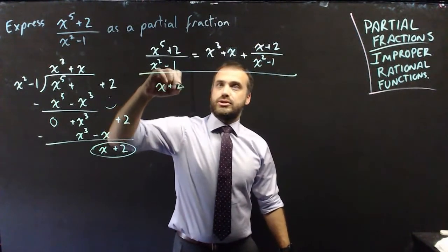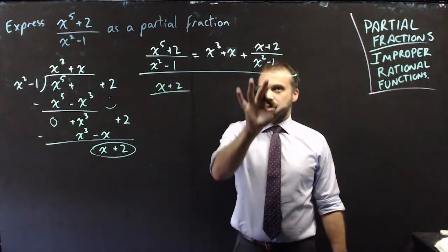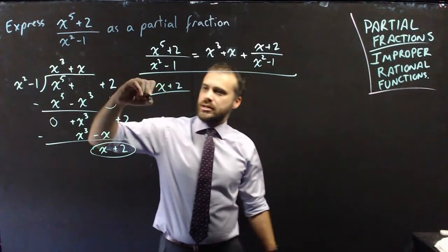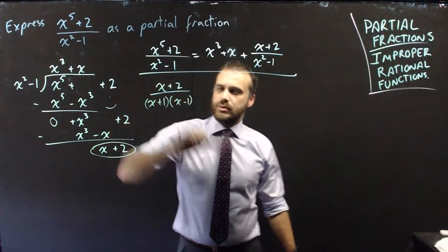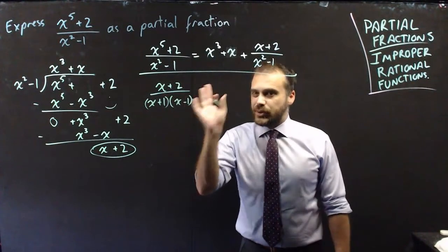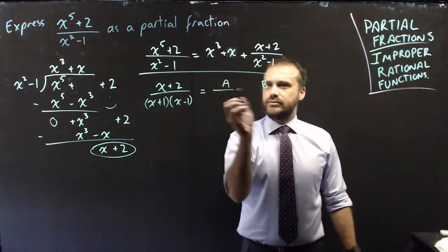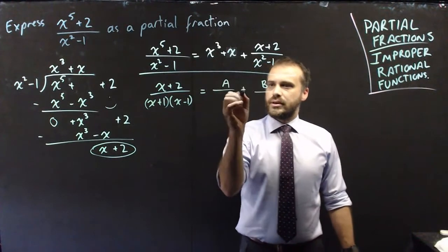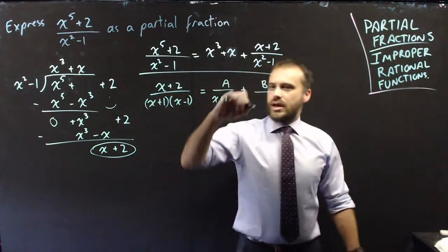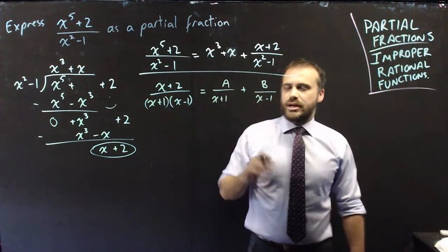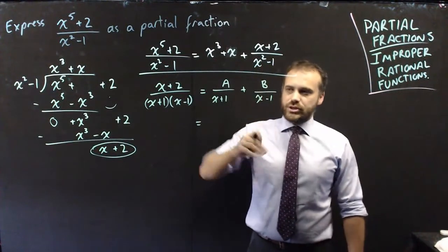So x plus 2 over x squared minus 1. Now x squared minus 1 is a difference of two squares, so we can express that as x plus 1 times x minus 1. We can say that this is going to be a fraction plus another fraction — one with a denominator of x plus 1, and one with a denominator of x minus 1.